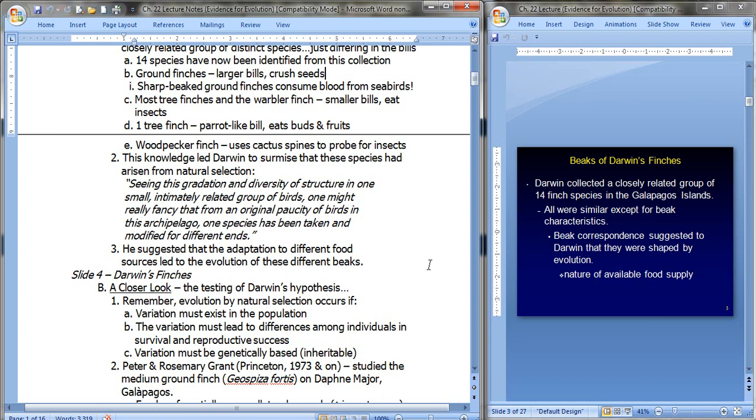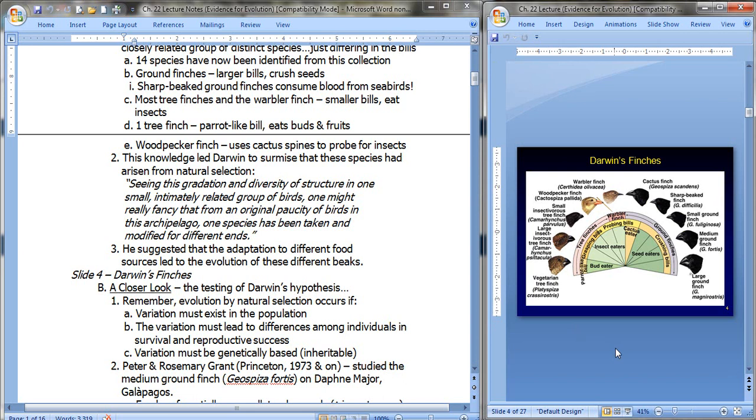So he basically was suggesting that the adaptation of different food sources led to the evolution of these different beaks. Form and function, right? So take a minute, maybe pause, and take a look at this picture and look at the different beak shapes of these different birds, what category of finch they're in, what their bill does, and what they eat.